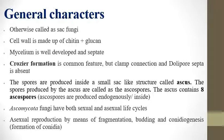The cell wall is made up of chitin plus glucan — a combination of chitin plus glucan. The mycelium is very well developed, and a septate type of mycelium can be observed in the Ascomycota group of fungi.